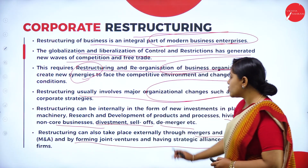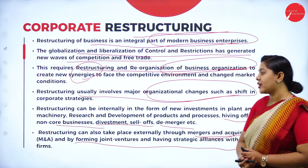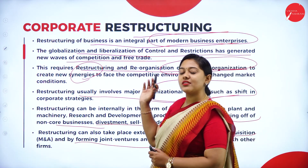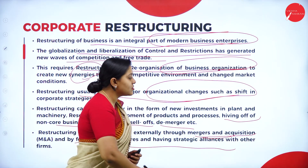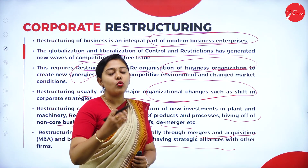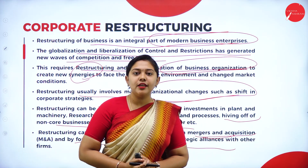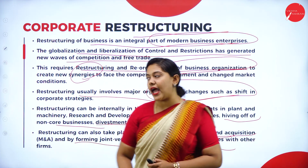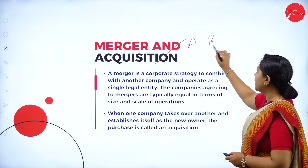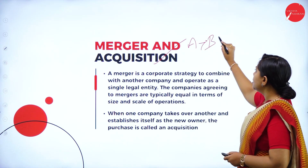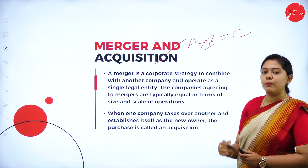External restructuring takes place through merger and acquisition, which is a corporate restructuring external strategy. What is a merger? If Company A and Company B together become Company C, then it is a merger. For example, Vijaya Bank merged with Bank of Baroda, and State Bank of Mysore merged with State Bank of India. These are real-world examples of mergers.